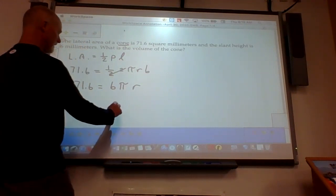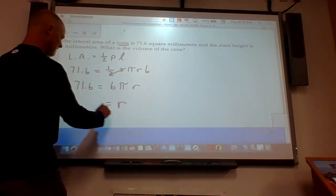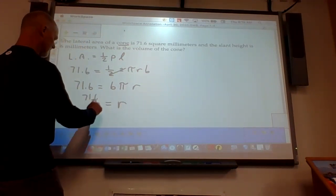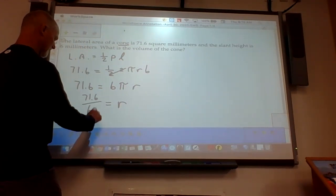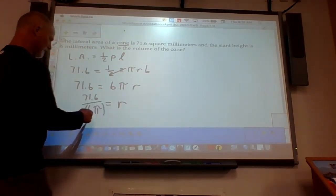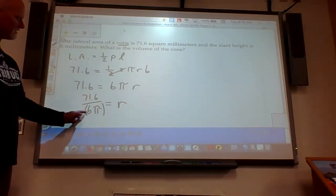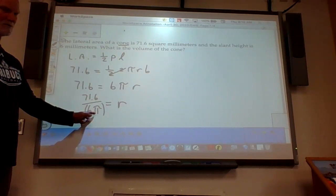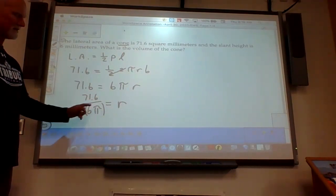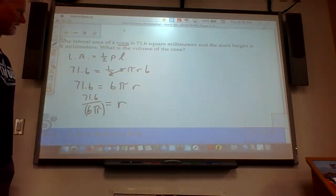So the radius becomes 71.6 divided by 6 pi. Now, you have to be really careful when you're calculating this. Because if you go 71.6 divided by 6, and then times pi, without the parentheses, you're not going to get the correct answer.